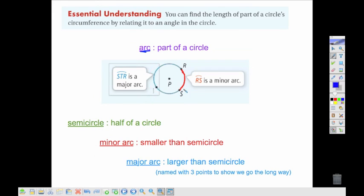So an arc is part of a circle, going from R to S. A semicircle is half of a circle. A minor arc, then, would be less than half of a circle, and a major arc would be more than half. So if I put the major arc with the minor arc, I could get the whole circle.